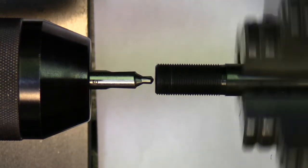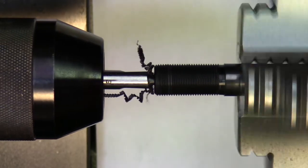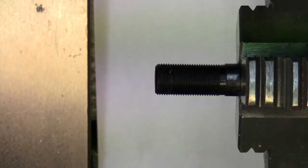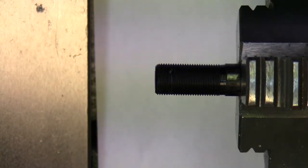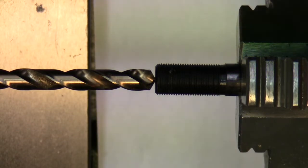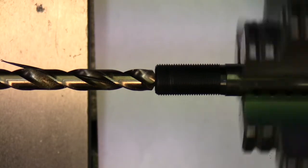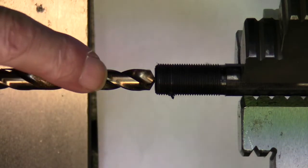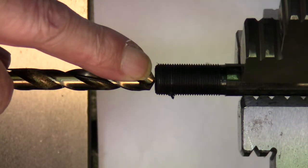I'm going to go ahead and center drill it. And I'm going to drill it up to - I'm using an R drill which is 0.339. What I like to do is get it right up to the edge of the part.